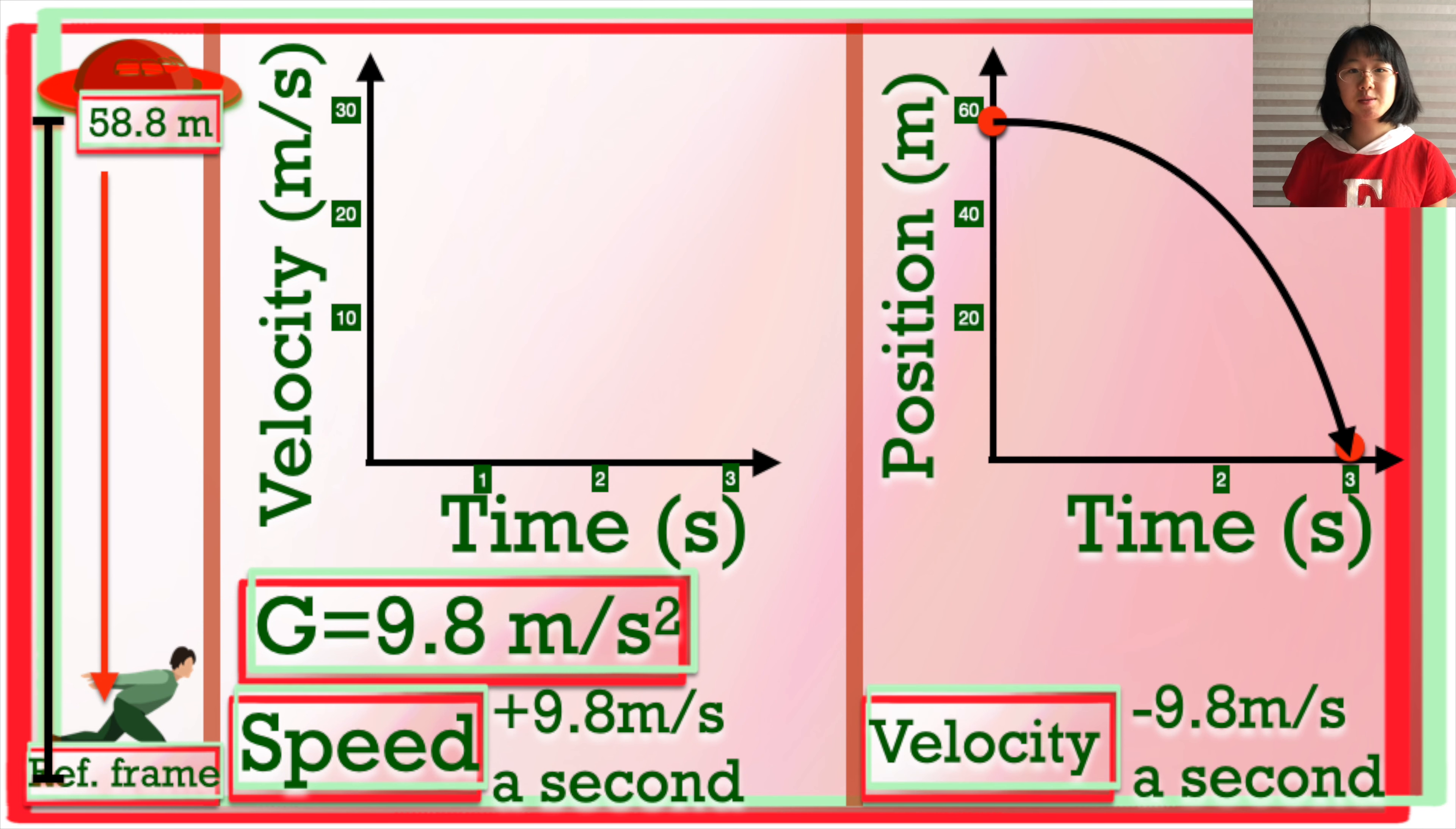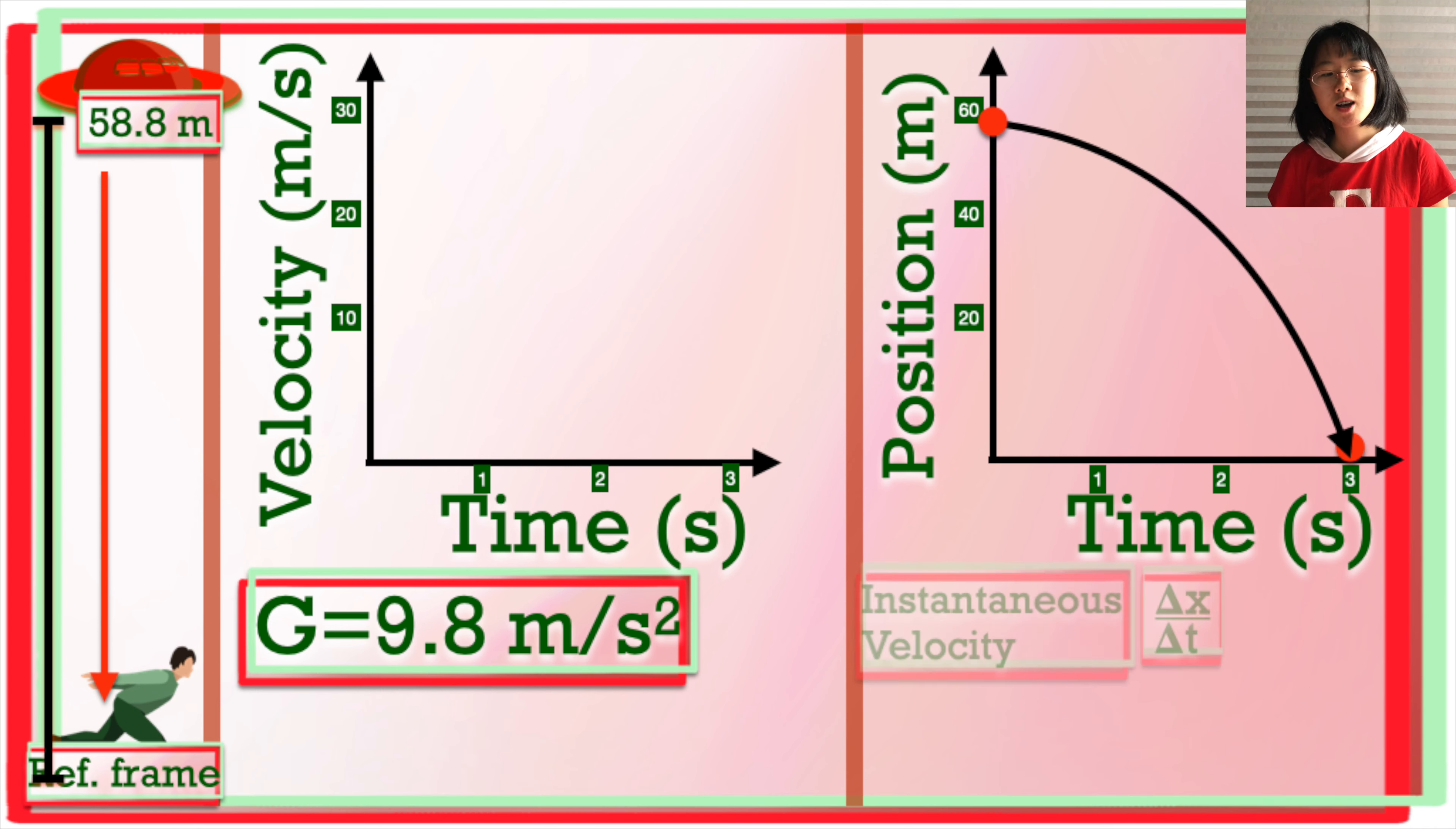The speed of the UFO is increasing because it's covering more and more distance, which can't be negative because it doesn't take direction into account, while the velocity of the UFO is decreasing because it's heading downwards, which is usually expressed as a negative value.